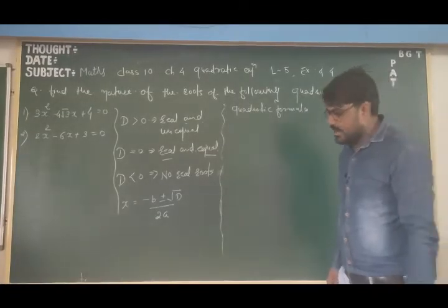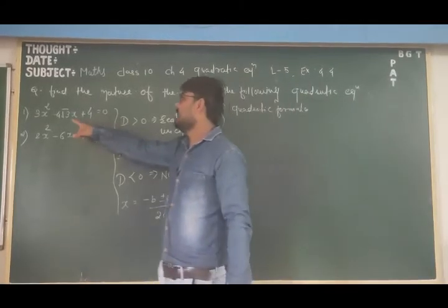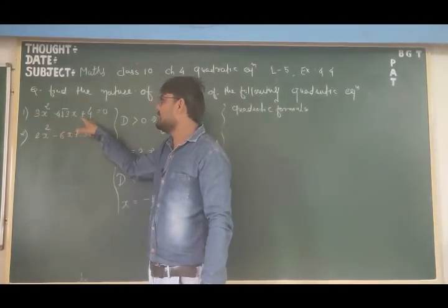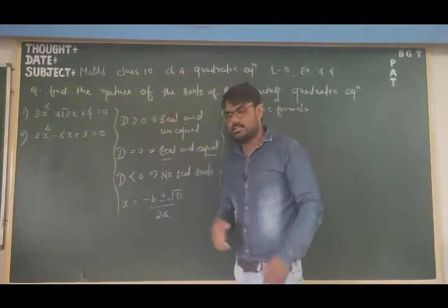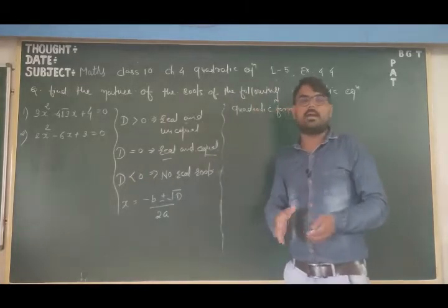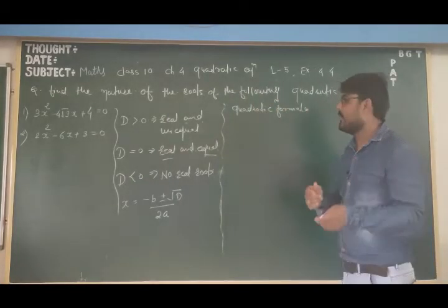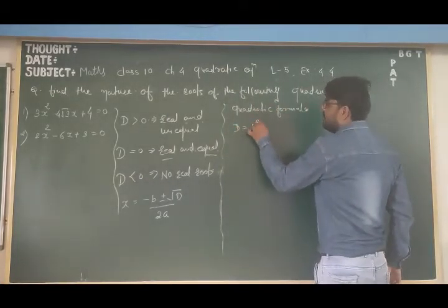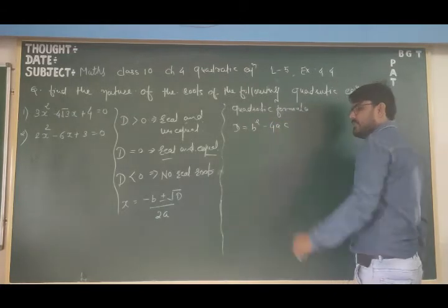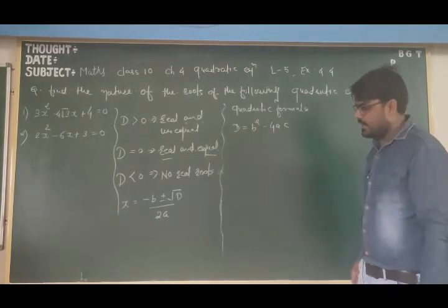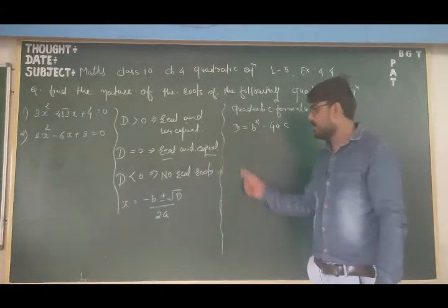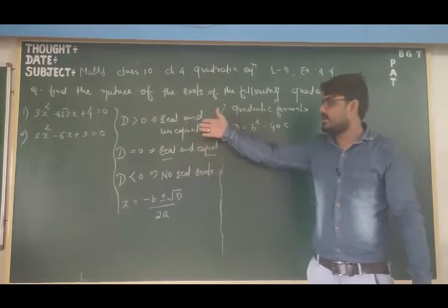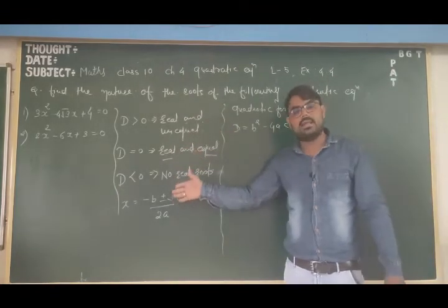Now look at the next question: 3x² - 4√3 x + 4 = 0. Solve this quadratic equation by the quadratic formula. So again, D equals b squared minus 4ac. First we need to find the value of D, because from D we have three options: greater than zero, equal to zero, or less than zero. First verify the value of D, and later find the roots.